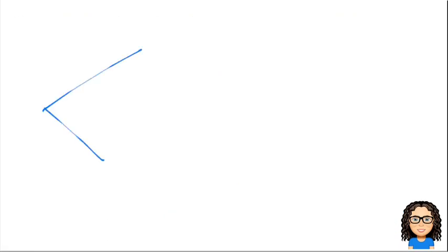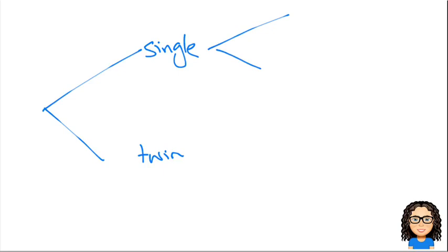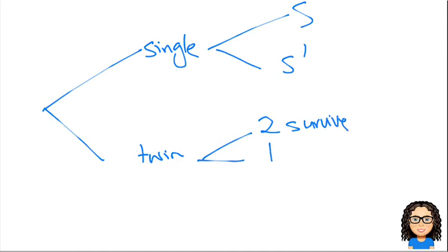So let's do this over here. We've got our single and our twin branches, and then we've got survive and not survive, and for twins we've got two survive, one survive, and no survives.